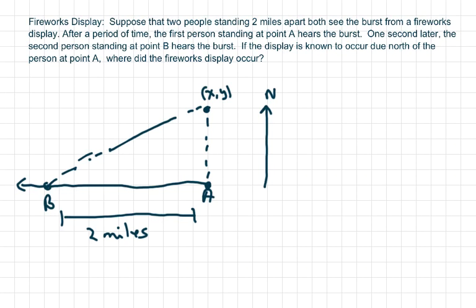Hi everyone. We're going to do a fireworks display problem. We have two people, A and B, standing two miles apart that see a burst from a fireworks display. After a period of time, the first person standing at point A hears the burst. One second later, the second person standing at point B hears the burst. If the display is known to occur due north of the person at point A, where did the fireworks display occur?